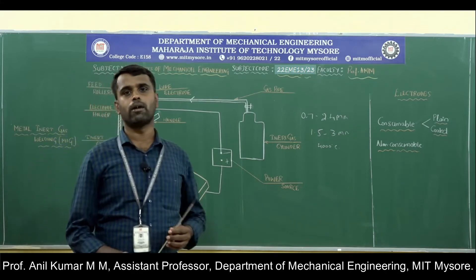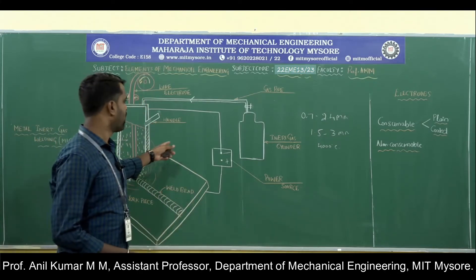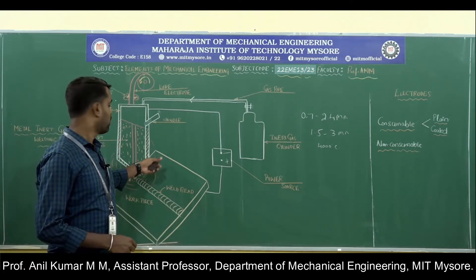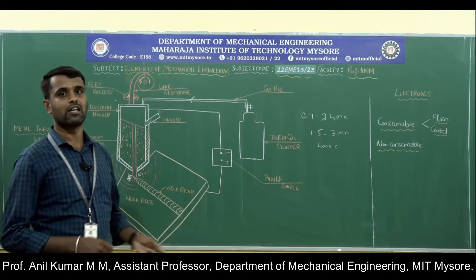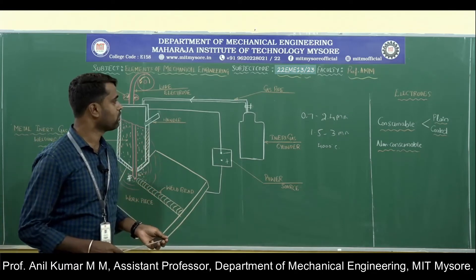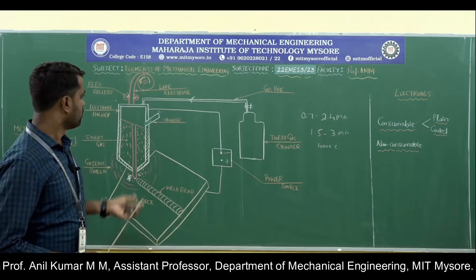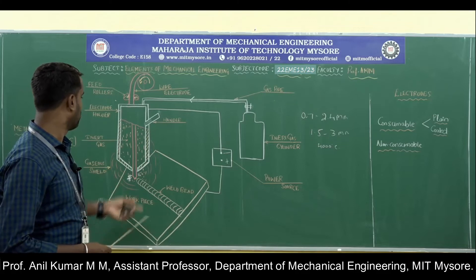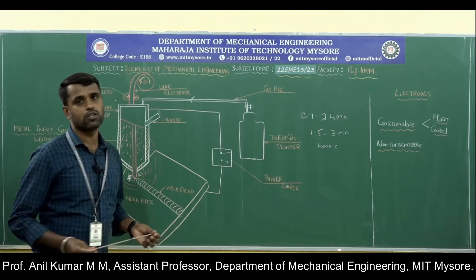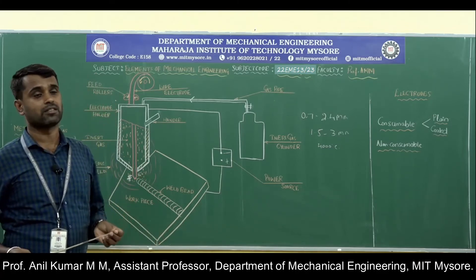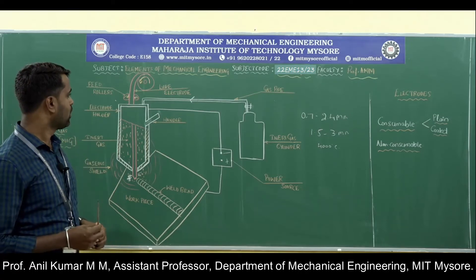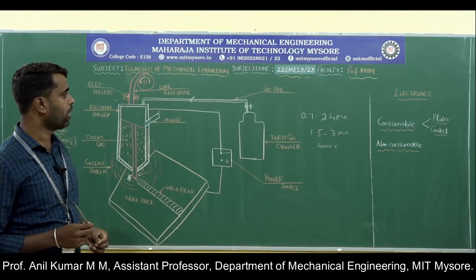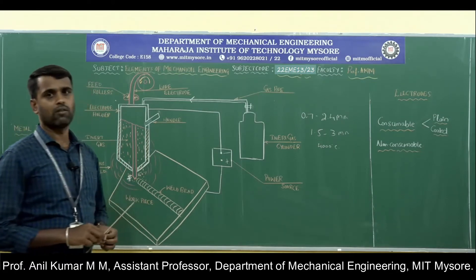Coming to the advantages, the MIG welding process is fast and economical. No flux is used, so there is no slag formation and clean welding joints are produced. The process can be automated, and it is suitable for welding both thin and thick workpieces. The weld deposition rate is very high.